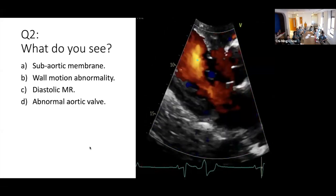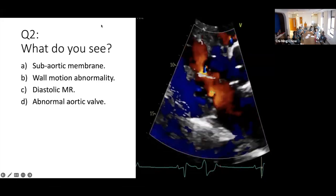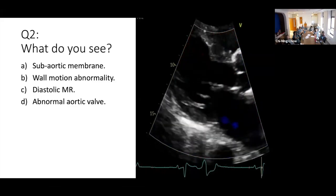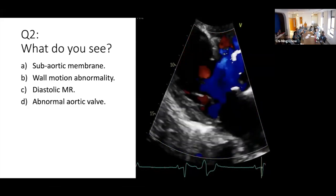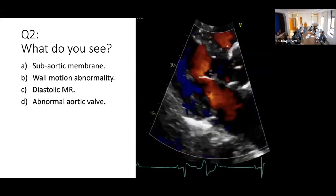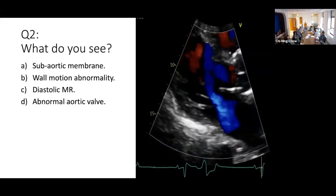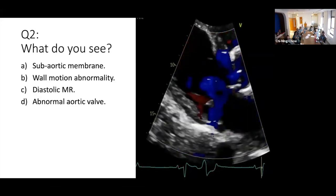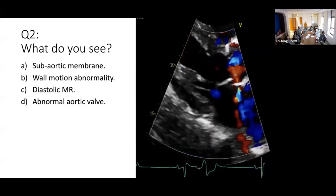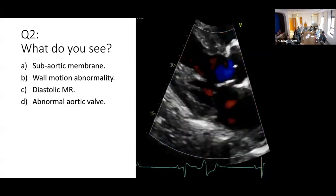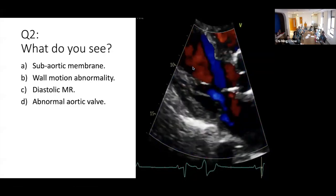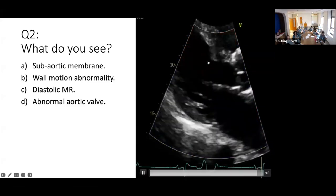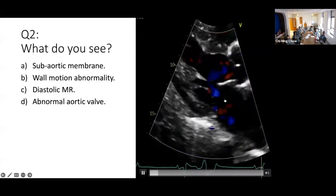What do you see here? This is a parasternal long axis with a lot of abnormalities. But what is the most striking thing? Is it a sub-aortic membrane? Is there a wall motion abnormality? Is there a diastolic MR? Is there an abnormal aortic valve? The answer is diastolic MR. I included sub-aortic membrane as a distractor because of the false body artifact creating that illusion, but there is indeed diastolic MR here.